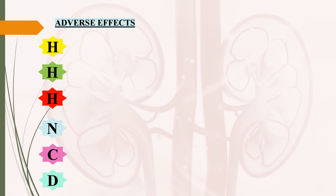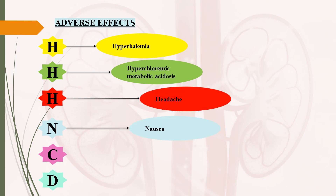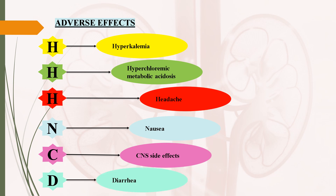Coming to adverse effects: you can remember these with the mnemonic triple H and NCD, where the first H stands for hyperkalemia, the second H stands for hyperchloremic metabolic acidosis, the third H stands for headache, N stands for nausea, C stands for CNS side effects, and D stands for diarrhea. Hyperkalemia is due to prevention of excretion of potassium ions in urine. Hyperchloremic metabolic acidosis is due to alteration in chloride and bicarbonate ion excretion. CNS side effects include confusion, lethargy, drowsiness, and ataxia.